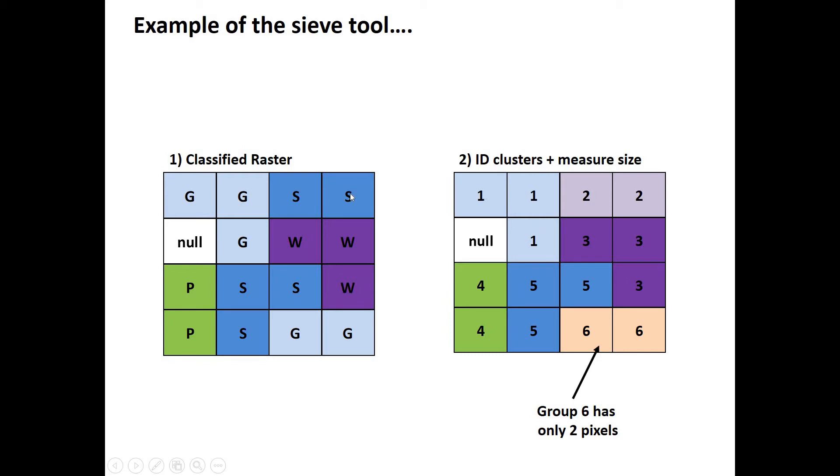These two S pixels are connected, let's name that cluster number two. It gives an ID to every cluster in the whole raster and it measures the size of the cluster, how many pixels. So notice group six down here only has two pixels, same with group four and group two.